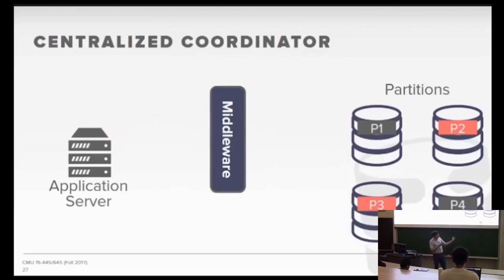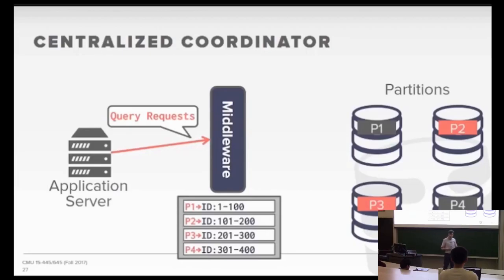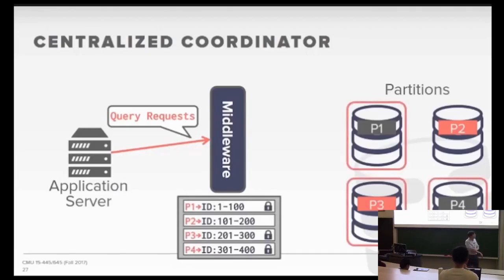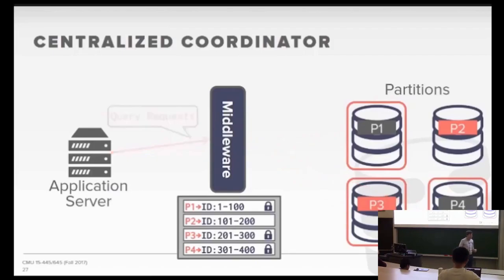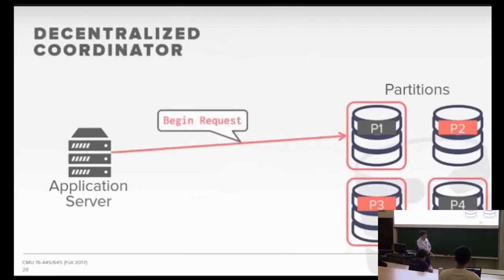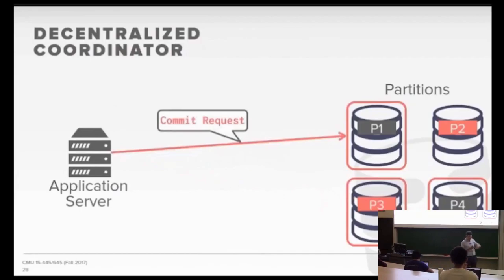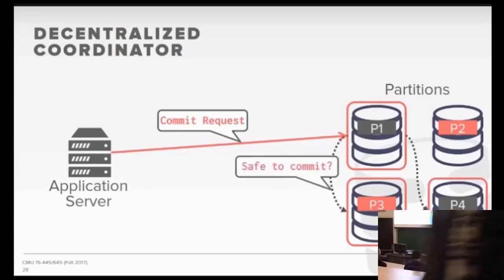I want to contrast this with the middleware approach, where the middleware is essentially a proxy — all your transaction and query requests go through it. The middleware maintains its own lock table to figure out who's modifying what data and what partitions. The application server only sees the middleware and sends all requests there. The middleware figures out where you actually need to go to do the operation, and when you want to commit, it's responsible for talking to the other partitions and asking if we're allowed to commit. Contrast this with the decentralized model where partitions organize themselves and decide whether the transaction is allowed to commit.